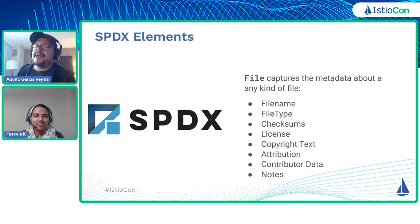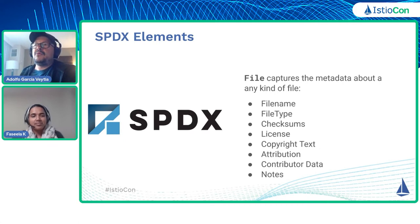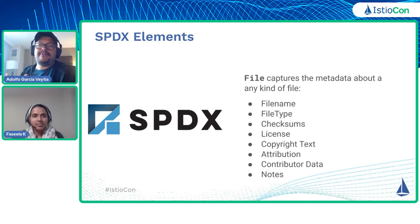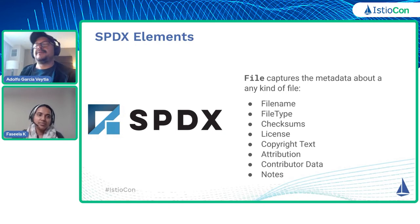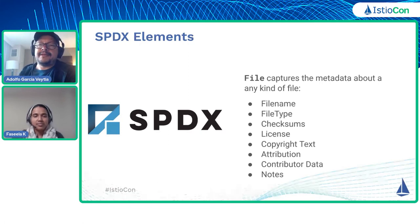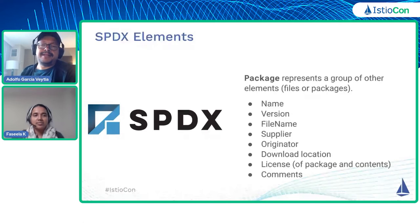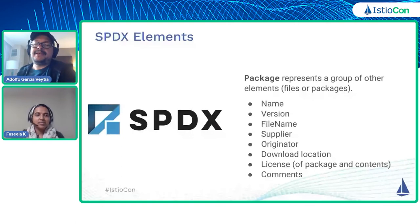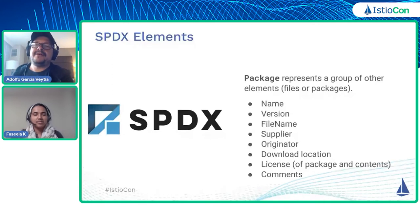Files can capture the file name and checksums — which are very important to ensure file integrity — as well as licensing information. The White House requirements derived efforts like the NTIA's definition of minimum elements of SBOMs. Those government guidelines establish the minimum elements all SBOMs should provide for identifying software components. Packages can have information like name, file name, originator, and licensing — and packages can have many licenses. The third part of the SPDX standard is the big and rich relationships catalog.